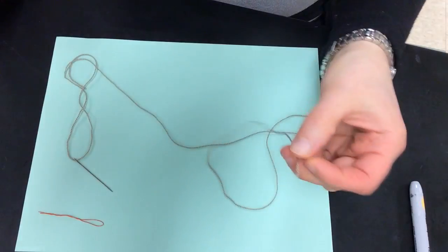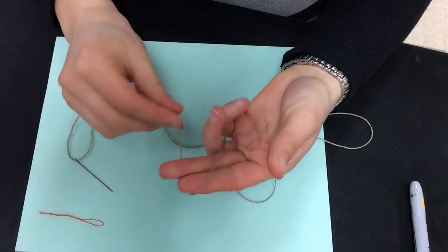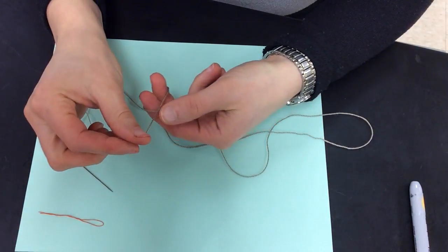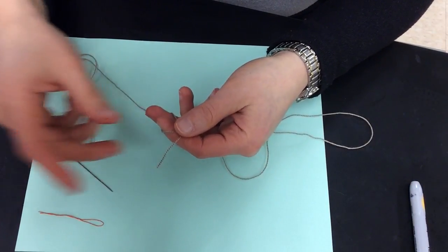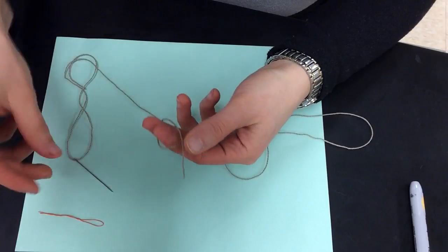Now what I'm going to show you is how to tie a knot at the end of your thread so that when you sew through, the thread doesn't come out of the fabric so that it stays in.